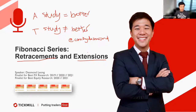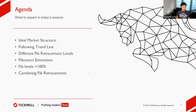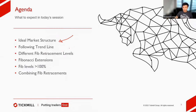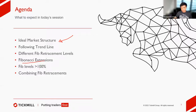This is our agenda for today. We're going to look at the ideal market structure for Fibonacci retracement, trend lines and following the trend, the many different Fibonacci retracement levels and which are important, Fibonacci extensions where it gets more intense going beyond 100 percent, and how to combine it all together.